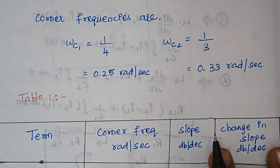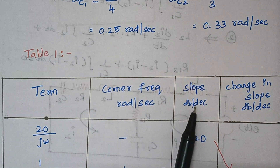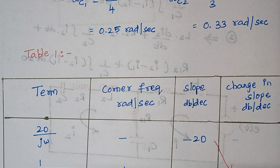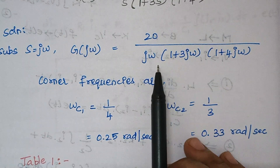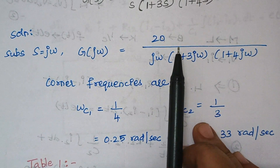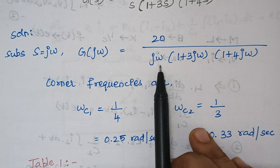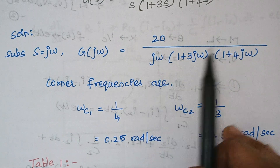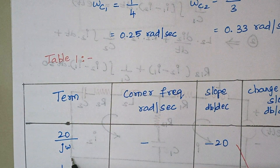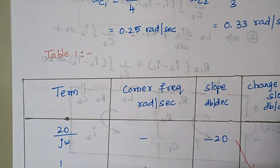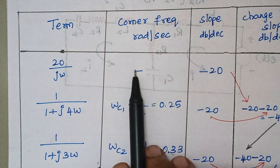The next step is forming a table. Our table always has these four columns: term, corner frequency, slope, and change of slope. The first thing is we have to include the constant along with the individual s term. So here the constant is 20 and the individual term is jω in the denominator, so this is our first term. Constants and individual s terms won't have any corner frequency, so it is nil here.